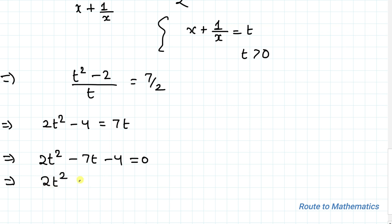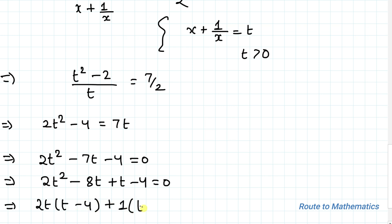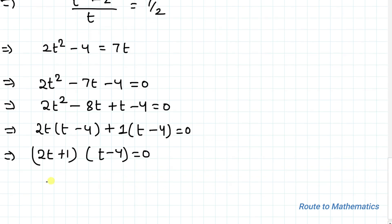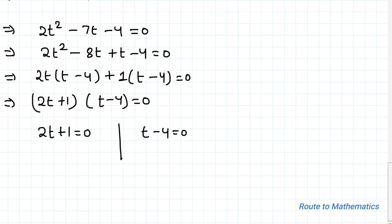We can write 2t squared minus 8t plus t minus 4 equals 0. Taking 2t common, we have 2t times (t minus 4), and taking 1 common from the remaining, we get (t minus 4) equals 0. This gives us 2t plus 1, multiplied by t minus 4, equals 0. So 2t plus 1 equals 0 or t minus 4 equals 0, giving t equals minus 1 by 2 or t equals 4.